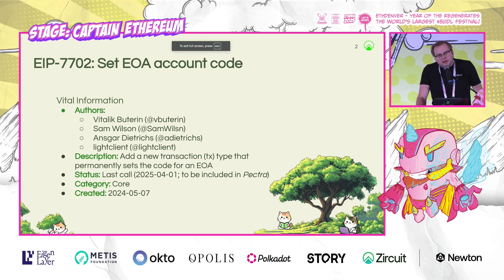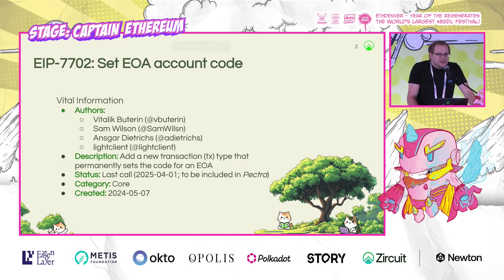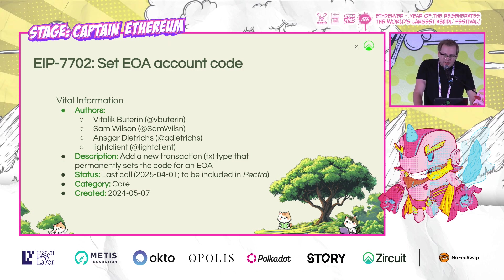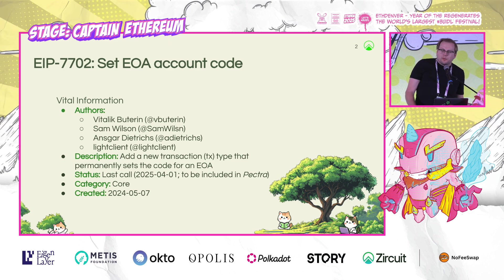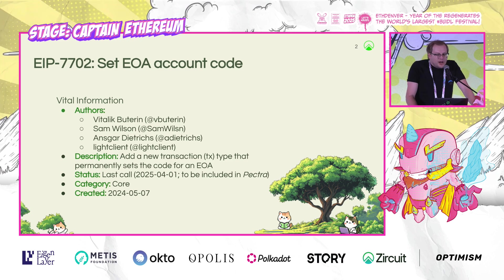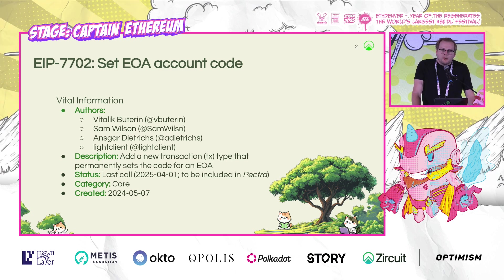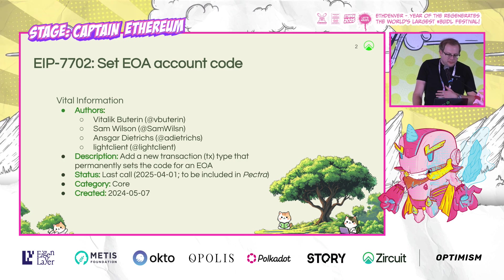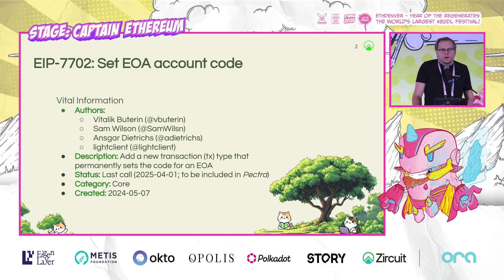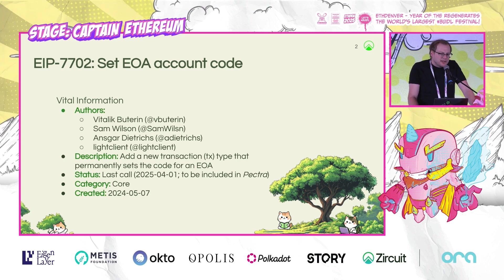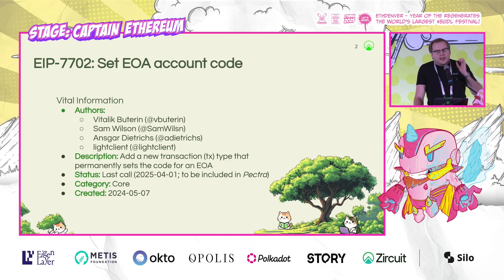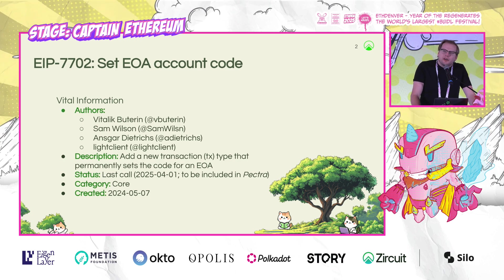So the boring technical details, or sort of the details of the EIP — which aren't that technical — what is it? What does EIP 7702 do? Well, it is an EIP that's about setting an EOA account code. That's the name of it, and it's authored by a bunch of well-known people and established researchers in the space.